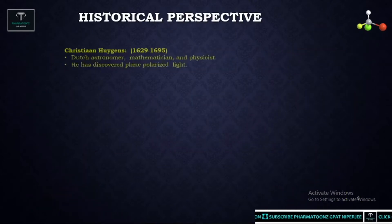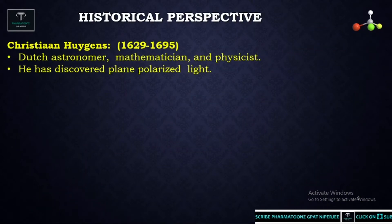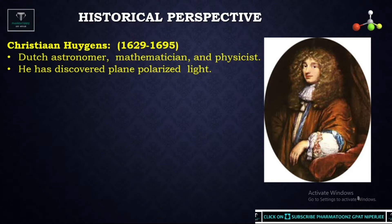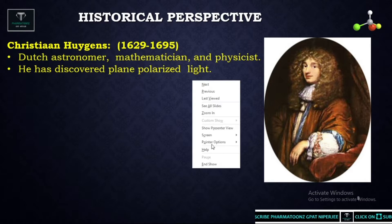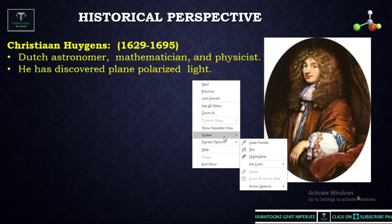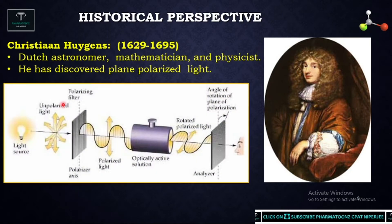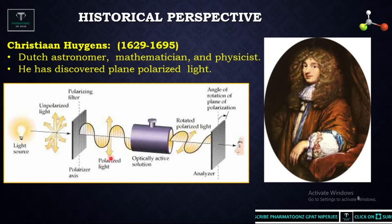Let us start with the first scientist — Christian Huygens. Basically he was a Dutch astronomer, mathematician as well as physicist, and he discovered plane polarized light. Plane polarized light means light waves that vibrate in only one possible plane.